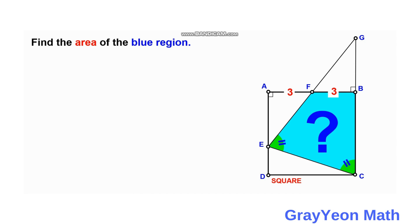Our strategy: since this is a square, and the other two areas are the white regions AFE and DCE, we just need to subtract these two areas from the square to find the area of the blue region.